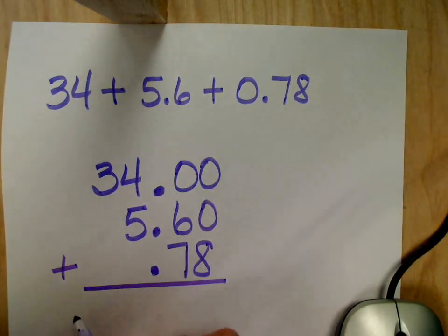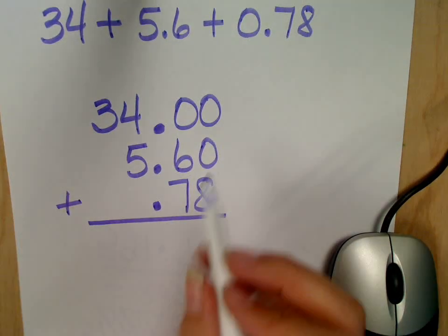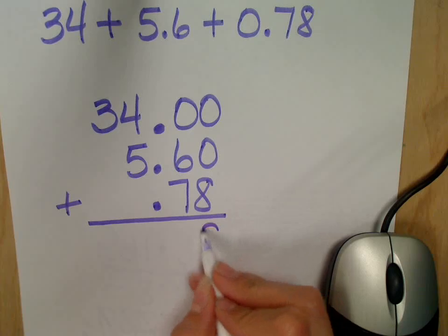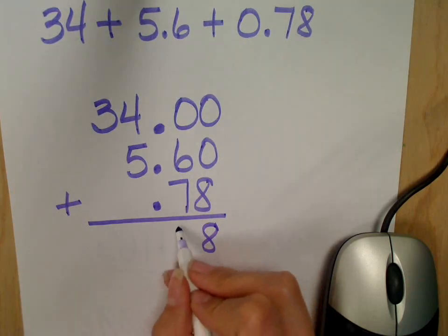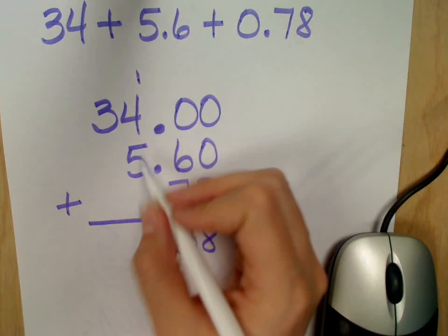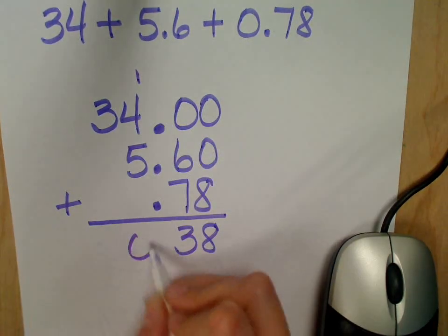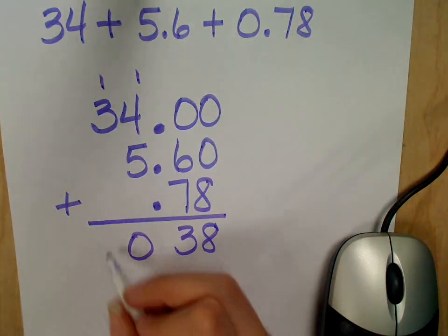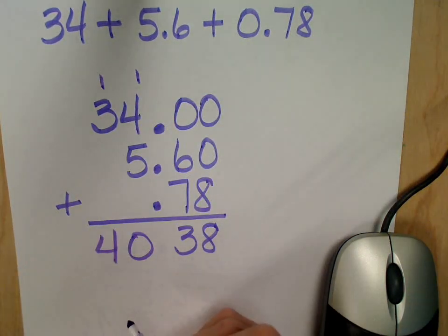And I'm adding. Don't forget, this is addition. So, 0, 0, and 8? 8. 7 and 6? 13. 5 and 4 is 9 plus 1 is 10. 3 and 1? 4. Bring down the decimal.